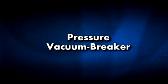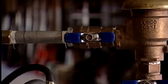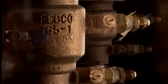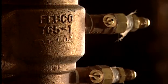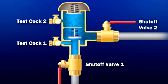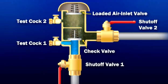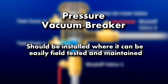The pressure vacuum breaker (PVB) is a device designed to prevent water from being drawn back into a water supply when the line is closed. The PVB has an internally loaded check valve and an air inlet valve located on the discharge side of the check valve. The PVB is only designed to prevent back siphonage and can be used for internal protection, but not against back pressure. It should be installed where it can be easily field tested and maintained.